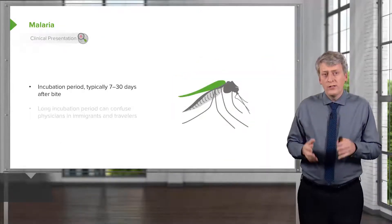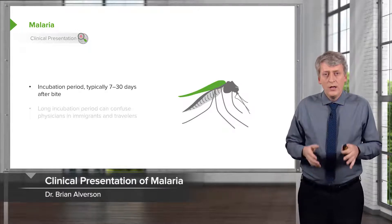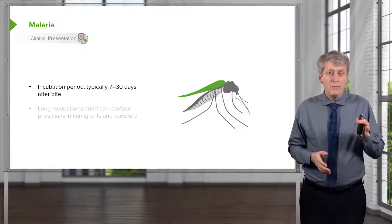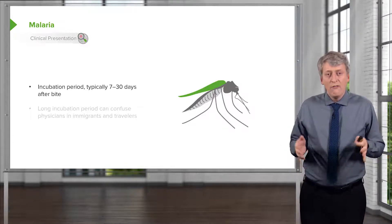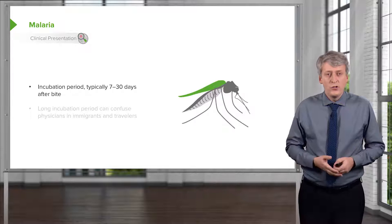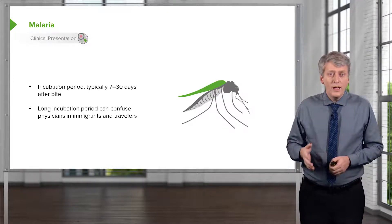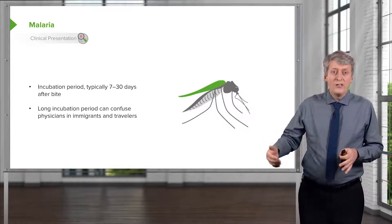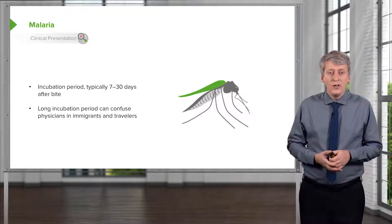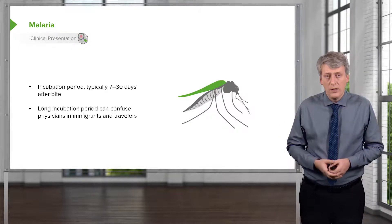Understanding malaria is important, and we should understand the incubation period. Typically, the time between being bitten and developing symptoms is 7 to 30 days — falciparum is often a little bit shorter. A long incubation period can confuse physicians with immigrants and travelers where the patient has been home for a period of time and then suddenly develops fever. Just remember this incubation period.